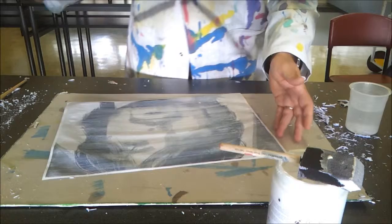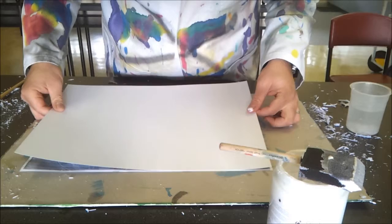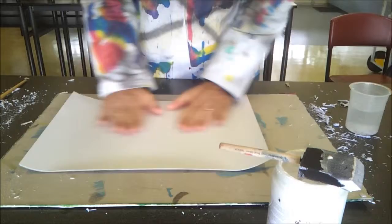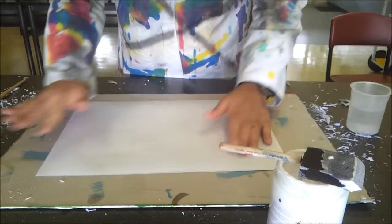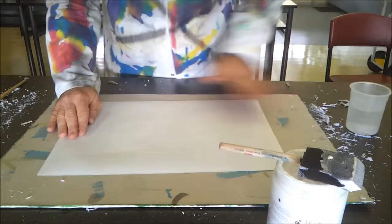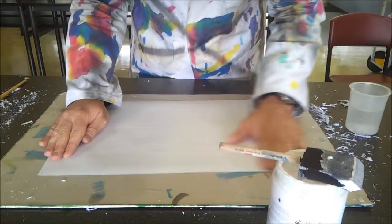And we grab our cartridge paper now and we line it up, smooth it out. And we should have a nice even printed or transferred image. With your fingers and your hands, you can just even it out, make sure there's no air bubbles.